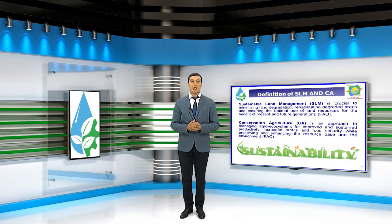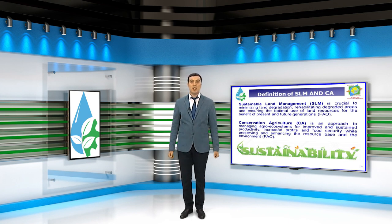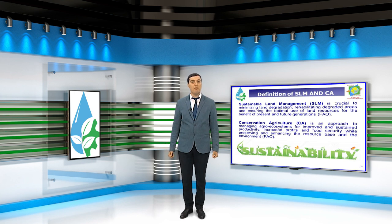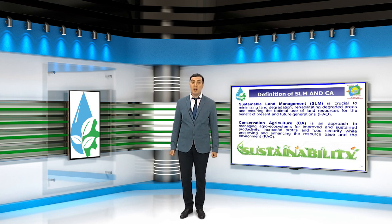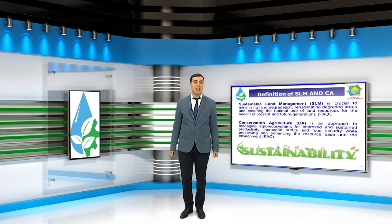Based on the definition of the Food and Agriculture Organization of the United Nations, sustainable land management is crucial to minimizing land degradation, rehabilitating degraded areas, and ensuring optimal use of land resources for the benefit of present and future generations. Conservation agriculture meets these requirements and supports sustainable land management practice.